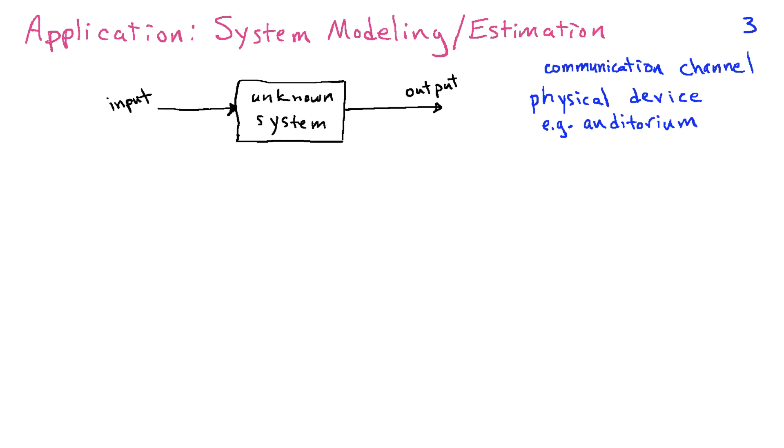There's another example that fits this general framework, and that is system modeling or estimation of systems. So the problem here is that we have some unknown system. We have an input going into that system and output coming out of that system, and we'd like to have a model or a mathematical description for the behavior of this particular system.